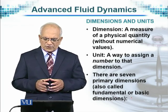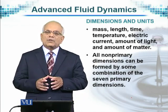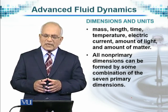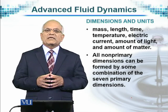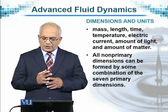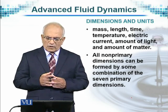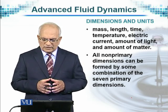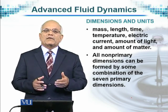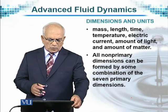There are seven primary dimensions, also called fundamental or basic dimensions, with the help of which you can almost measure any other variable. These seven basic dimensions are for mass, length, time, temperature, electric current, amount of light, and amount of matter. All non-primary dimensions can be formed with their help.